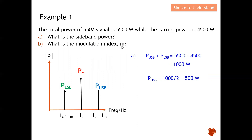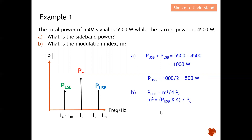Next, the question asks us to find the modulation index m. The formula to calculate the power of either sideband is used. Our objective is to find m — I rearrange by multiplying by four and dividing by the carrier power. From here I can compute the modulation index, which is 0.667.